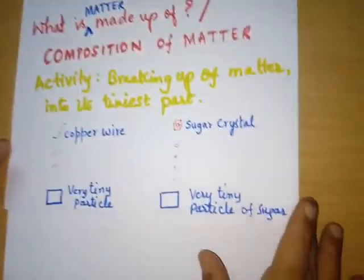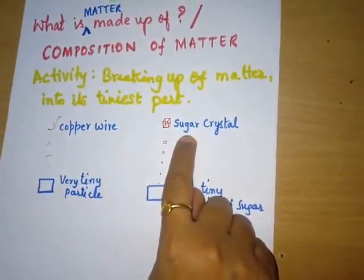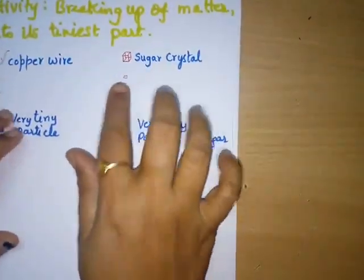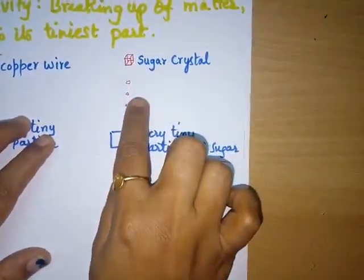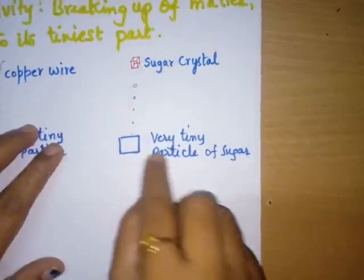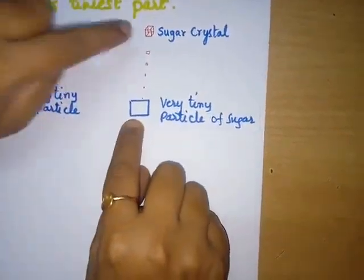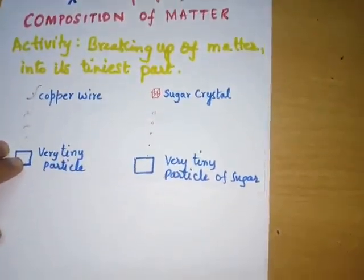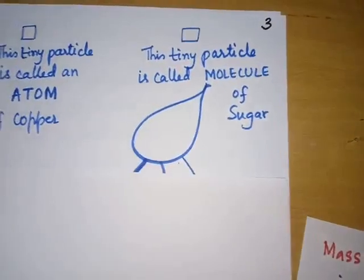Similarly, I take another matter — sugar crystal. I pound it; it breaks down into smaller pieces. I take one smaller piece and continue to break it down into a very, very tiniest part where I am not able to see the particle. But still it possesses all the properties of that sugar crystal. This very tiny particle of sugar is called a molecule of sugar.